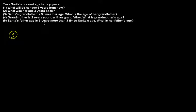The fifth problem: father's age is five years more than three times Sarita's age — what is her father's age? If Sarita's age is y, then three times Sarita's age is 3y, and five years more means 3y plus 5. So the father's age is 3y + 5.